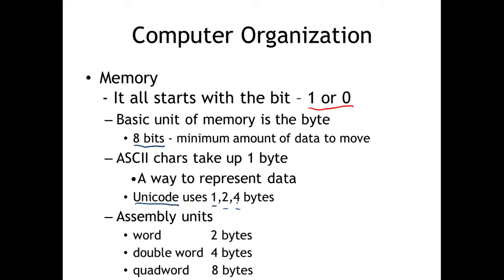As far as assembly goes, we're going to run into these units of measure. They're discussed in the book, so hopefully you've read through that material and got a basic understanding. We'll have things like the word, the double word, the quad word, and they go beyond that. We're primarily going to focus on the 32-bit world here in the course — x86. We're not looking at 64-bit.